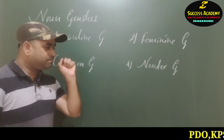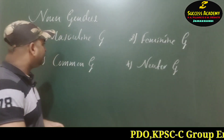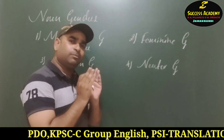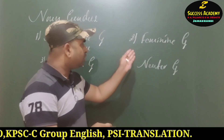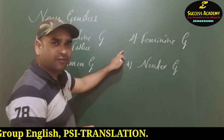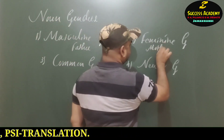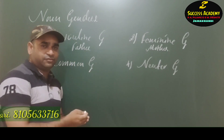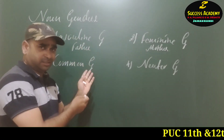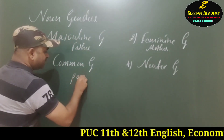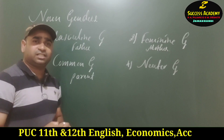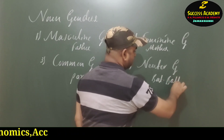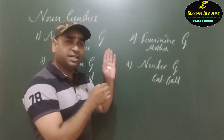Masculine gender means the group of nouns which are for male only. For example, 'father.' The group of nouns which belong to female are called feminine gender. If we change 'father' to feminine, it becomes 'mother.' When we want to say both together as a common gender — whether it is a mother or father, whoever they are — we say 'parent.' Parent is common gender. And for neuter gender, for example, bat or ball — these are all nouns and are considered neuter gender.